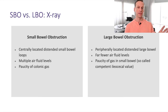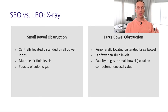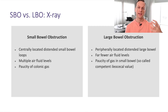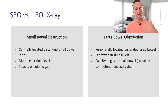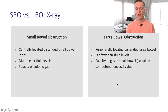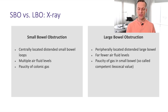As mentioned in the previous lecture, differentiating large bowel from small bowel obstruction is very important for the management plan. On X-ray, small bowel obstruction shows centrally located dilated loops, multiple air-fluid levels, and a paucity of colonic gas. Large bowel obstruction typically shows peripherally located distended large bowel with far fewer air-fluid levels, because the small bowel is usually still able to dump its contents into the large bowel — and therefore a paucity of small bowel gas as well.